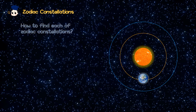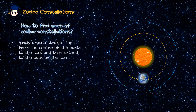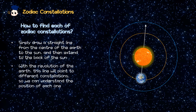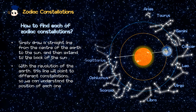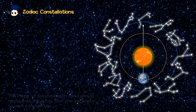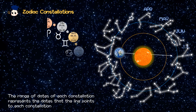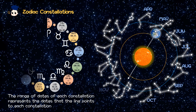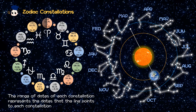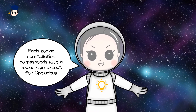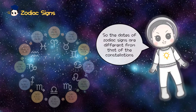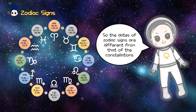How to find each of the zodiac constellations? Simply draw a straight line from the center of the Earth to the Sun, and extend it beyond the Sun. With the revolution of the Earth, the line will point to different constellations, so we can understand the position of each one. A range of days for each constellation represents the days that the line points to each constellation. Each zodiac constellation corresponds with a zodiac sign, except for Ophiuchus. So the days of zodiac signs are different from that of the constellations.